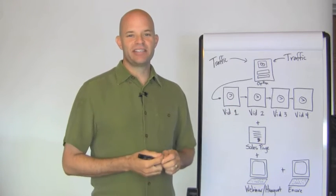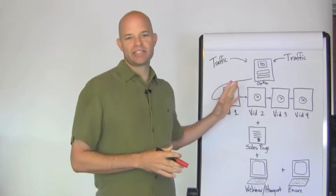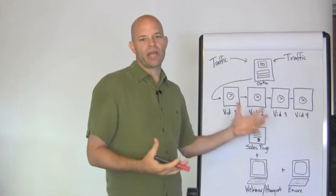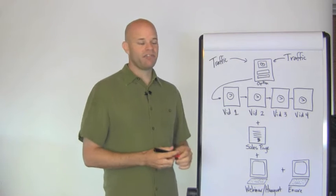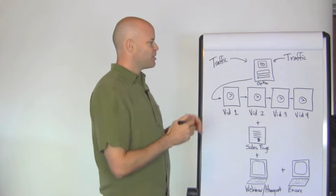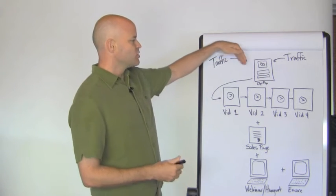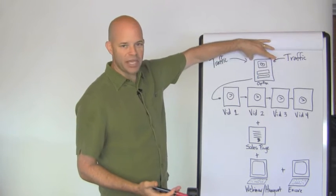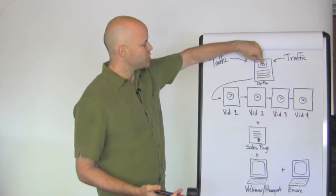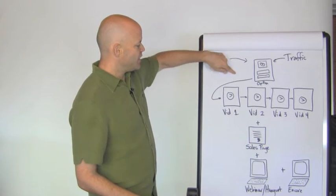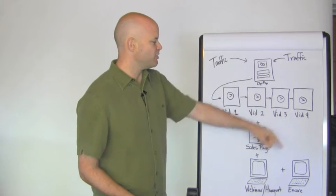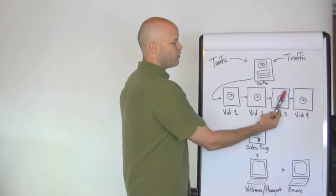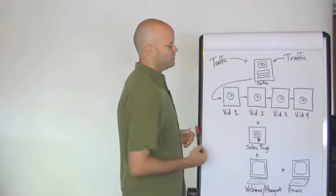Hey, glad you are joining us for this launch. I just want to take a few minutes to give you an overall structure of what I plan to do. This is the basic structure of a traditional launch — you've got an opt-in page where you send people with a video, they put their name and email in, and then you send them a series of videos. The classic video launch is basically four videos, and the fourth video is a sales video.